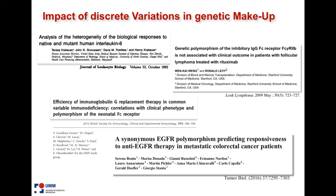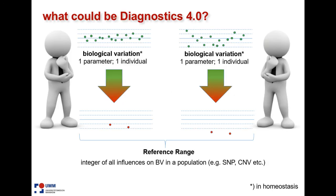And then to add still one more dimension to it: if you talk about biological variation, that's an individual thing. If you talk about the biological variation of another person, that might be very different. And our reference ranges, as we are used to them, are defined for a population situation.